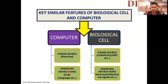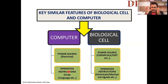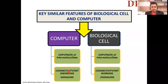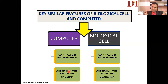Both systems also need operating instructions. Computers process different types of information in the form of code language, and similarly the biological cell needs operating instructions like chemical signals, mechanical signals, and many more different types of input.